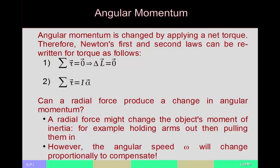To summarize: just as you change linear momentum by applying force, if you want to change angular momentum you apply a net torque. If all torques sum to zero, the change in angular momentum is zero. If there is a net torque, it equals the change in angular momentum — which is moment of inertia times the change in angular speed per unit time. Since angular speed per unit time is angular acceleration, the net torque equals I times alpha, which is what we had before.